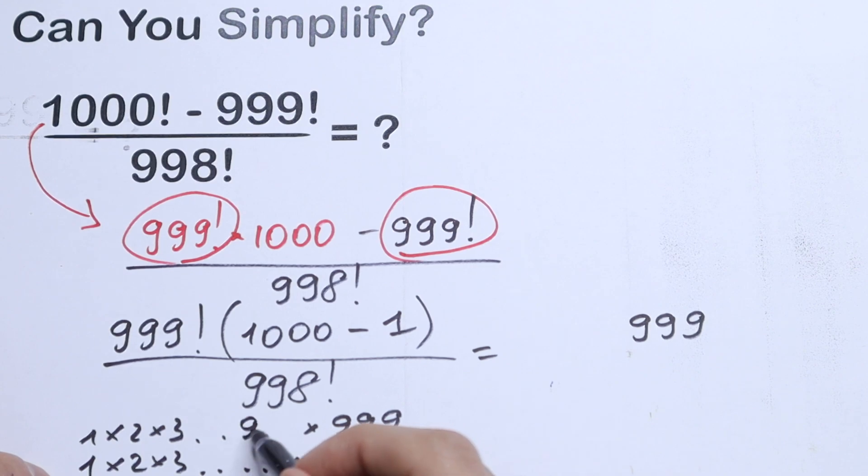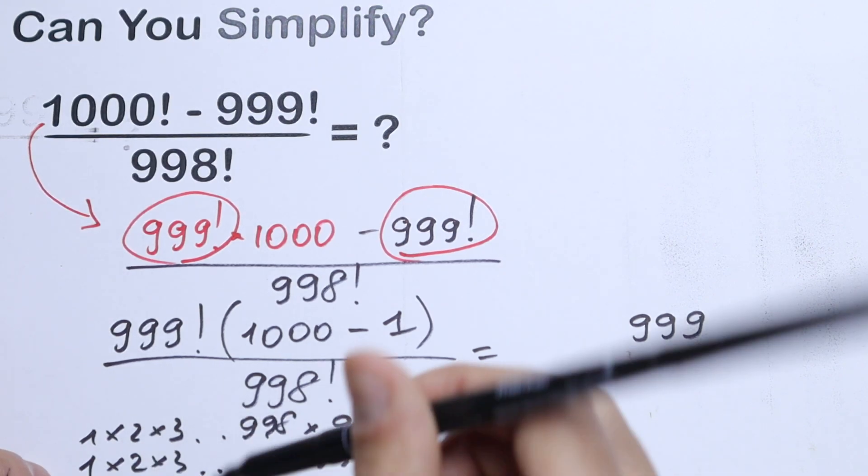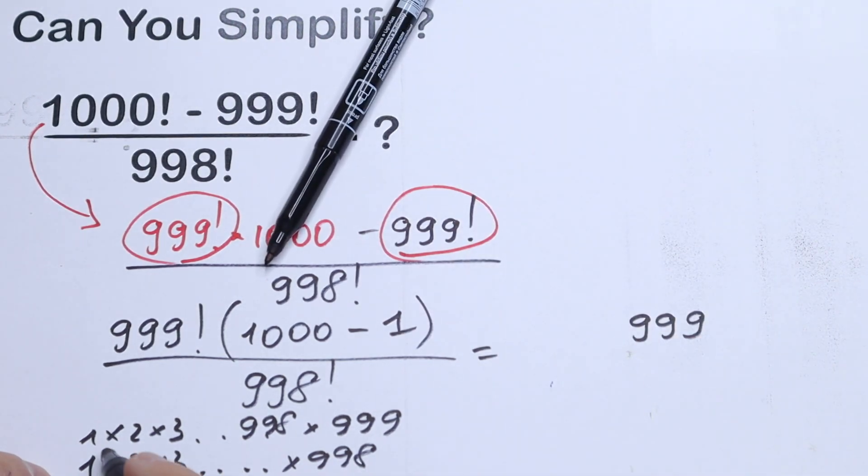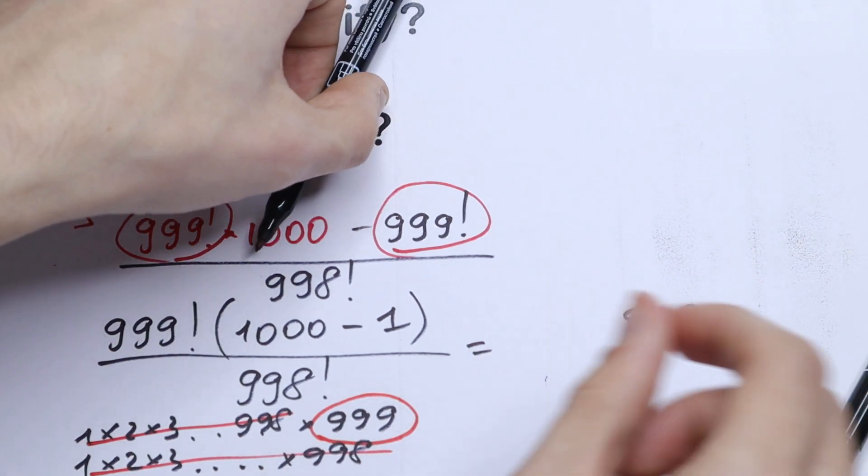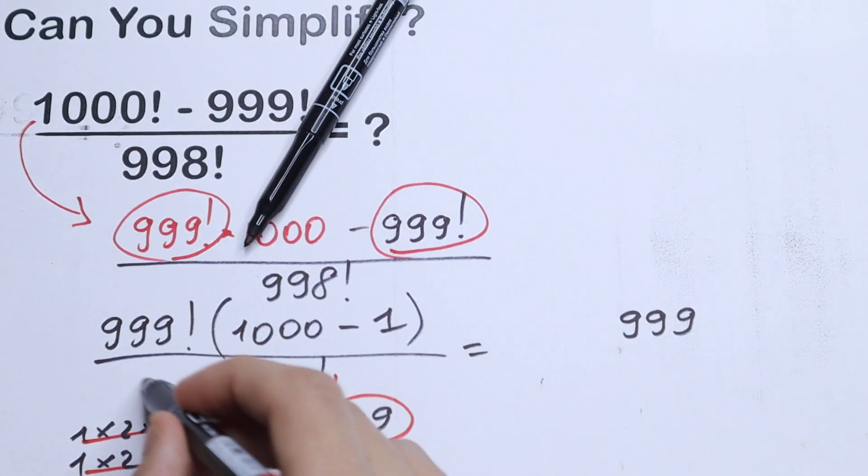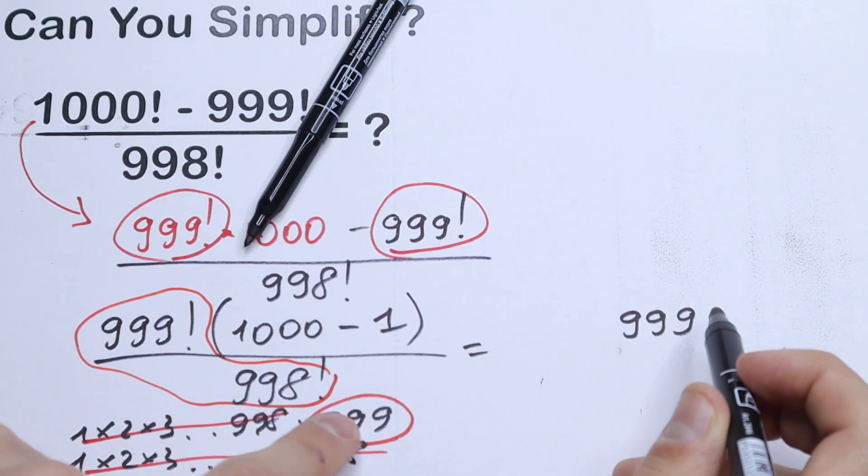And right here we of course have 998. So if we cancel all of these elements, our final answer will be 999. So from here we have only 999. This will be equal to 999.